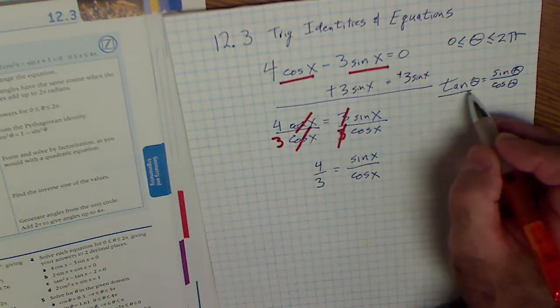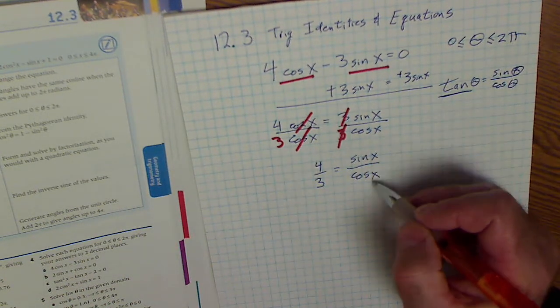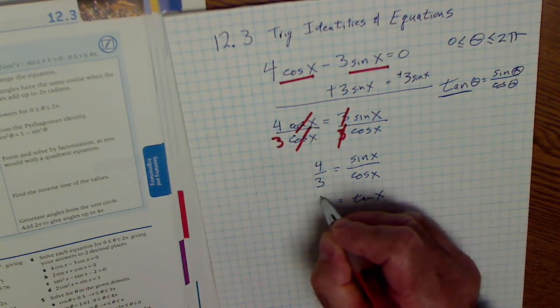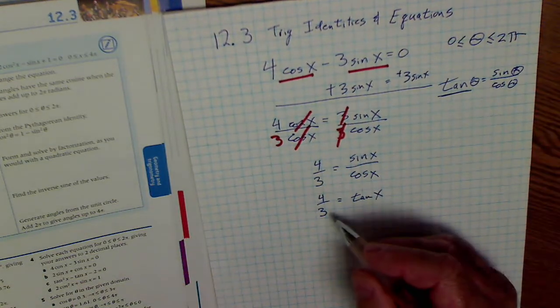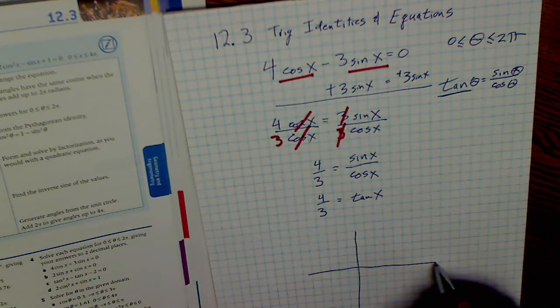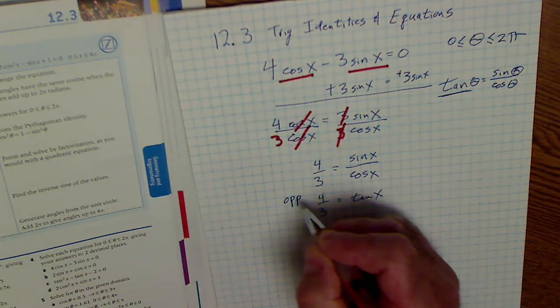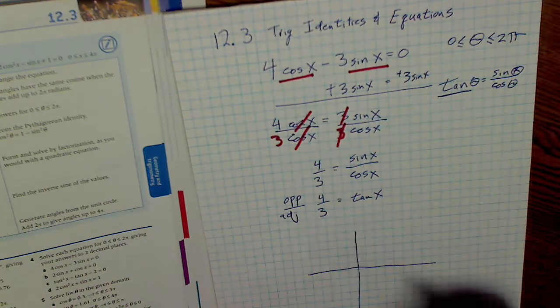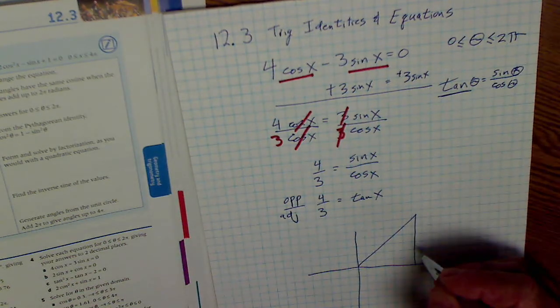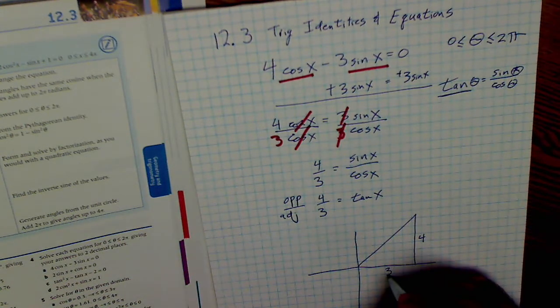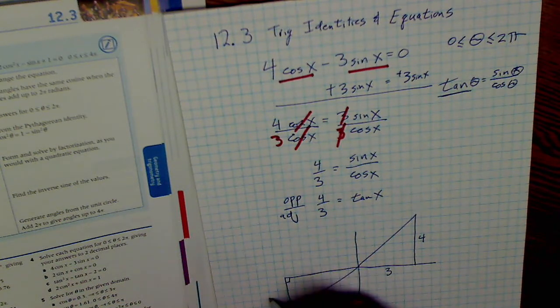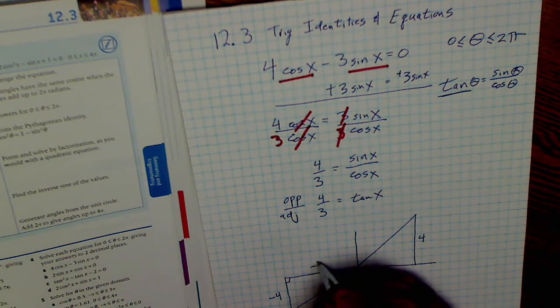And now this is where I use my identity substitution. Sine over cosine is tangent. So that means tangent of x is equal to 4 thirds. It's a positive ratio of sides where the opposite is 4 and the adjacent is 3. So that's going to happen in the first quadrant where I have a triangle with an opposite of 4 and adjacent of 3, or in the third quadrant down here where the opposite is negative 4 and the adjacent is negative 3.